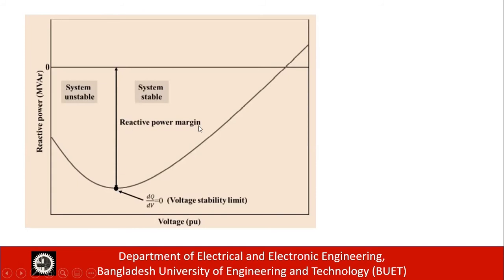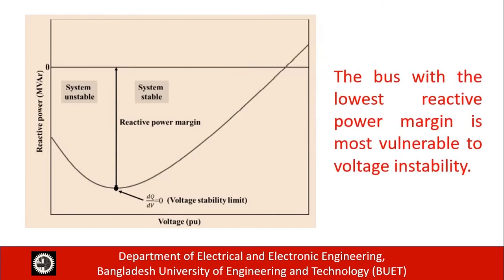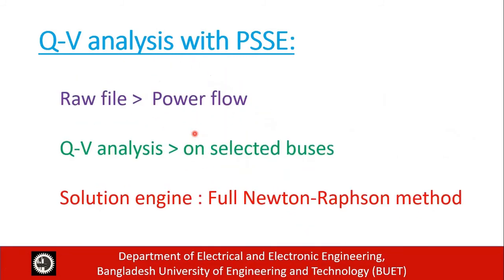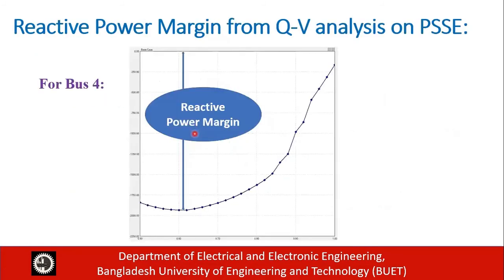The bus with the lowest reactive power margin is most vulnerable to voltage instability. For the QV analysis with the software, we took the raw file, did load flow analysis, then performed QV analysis on selected buses. We used the full Newton-Raphson method as the solution engine. After performing QV analysis, we obtained reactive power margin for all buses. For example, here is the QV curve for bus 4, where the difference between the base case operating point and the collapse point indicates the reactive power margin.